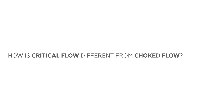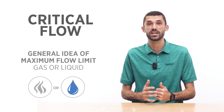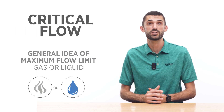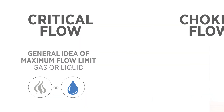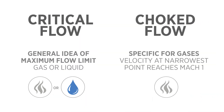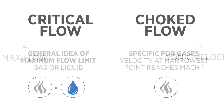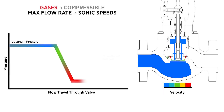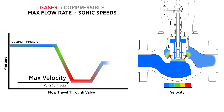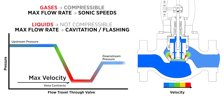The terms are often used interchangeably, but here's the distinction. Critical flow is the general idea of a maximum flow limit, and it applies to both gases and liquids. Choked flow is the specific case for gases, where velocity at the narrowest point reaches Mach 1, or the speed of sound. Since gases are compressible, they reach sonic speeds at a restriction. Liquids don't normally do this, so true choked flow doesn't occur. Instead, liquids reach maximum flow rate due to cavitation or flashing, not Mach 1 speeds.